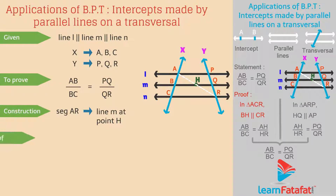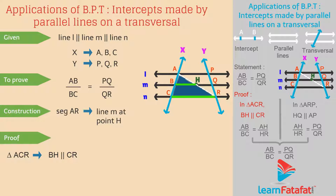Proof: Consider triangle ACR. In this triangle, BH is parallel to CR. So, by BPT, AB divided by BC is equal to AH divided by HR. Consider this as relation 1.